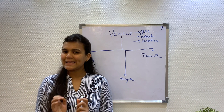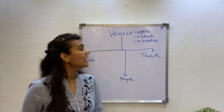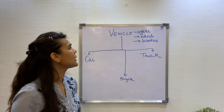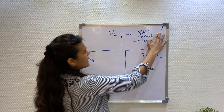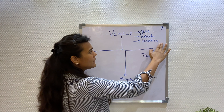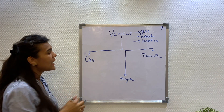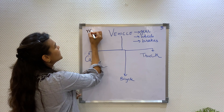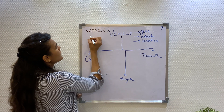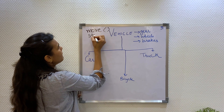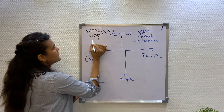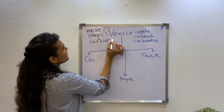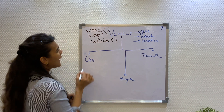I will show you this with an example. We had a vehicle class from the previous videos wherein we had the gears, the wheels and the brakes as the common properties. And we had certain methods like move, stop, calculate distance and carry load.